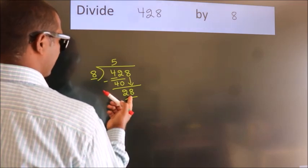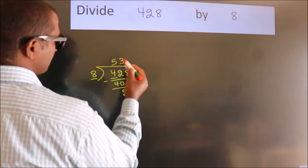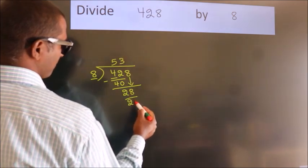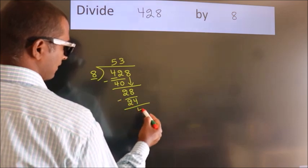A number close to 28 in 8 table is 8 threes 24. Now we subtract, we get 4.